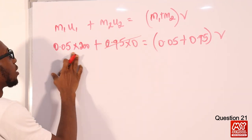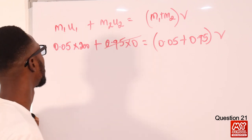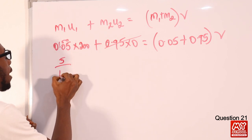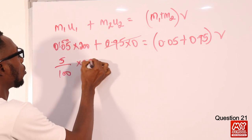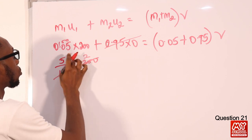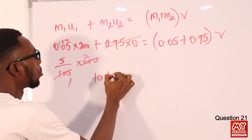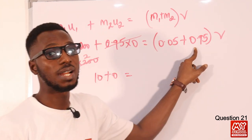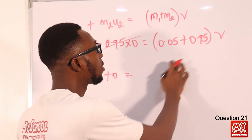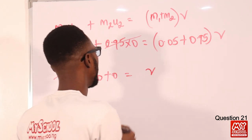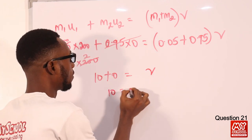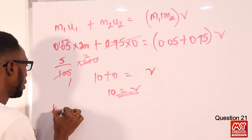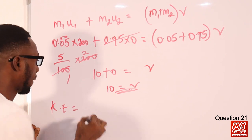So 0.05 times 200 equals 10. The combined mass is 0.05 plus 0.95, which is 1.00. So 10 equals 1 times v, giving v = 10 m/s. Now we find the kinetic energy: KE = half mv squared.